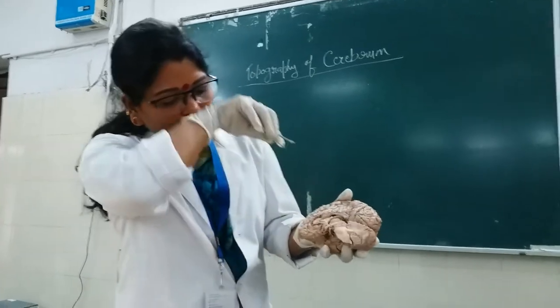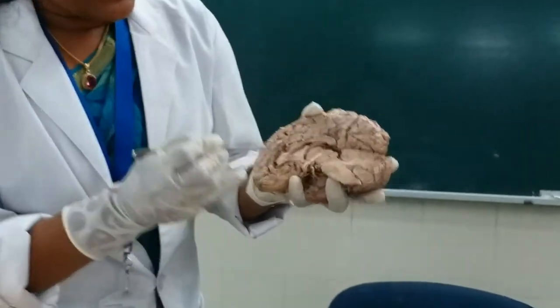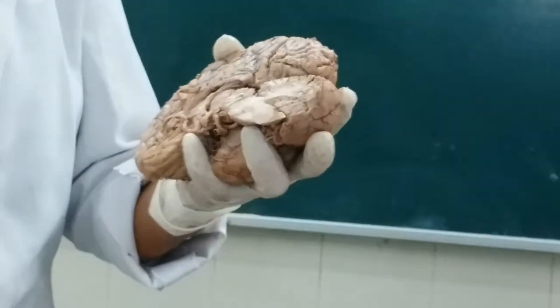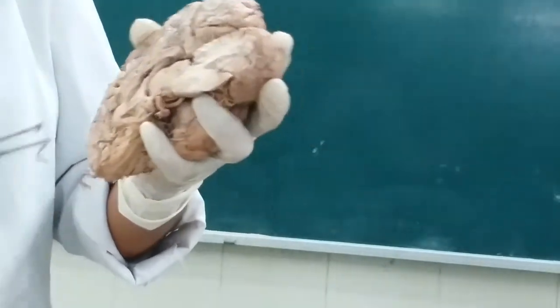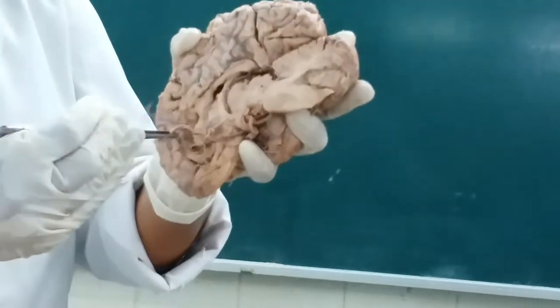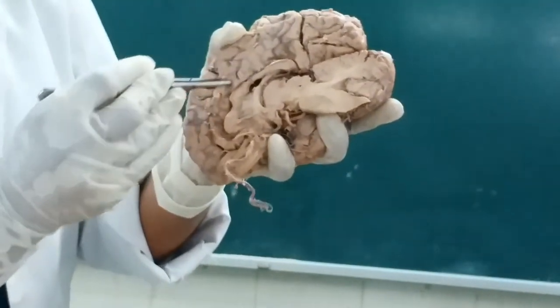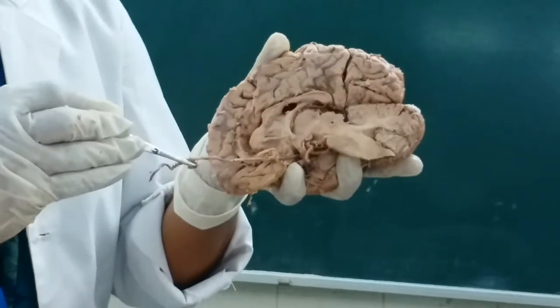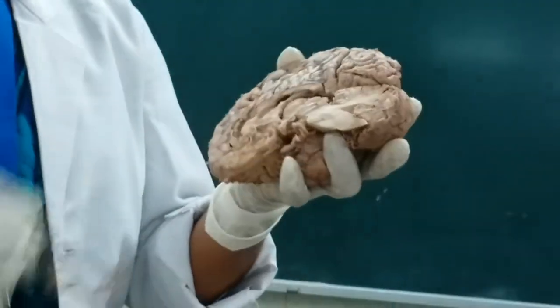Before going to the function, we need to see the structures on the medial surface. Here I am taking out a branch — which artery is this, winding around the superior border of the corpus callosum? That is the anterior cerebral artery. Look here, this is the anterior cerebral artery.